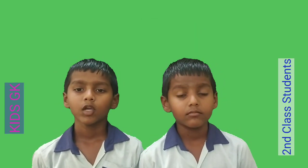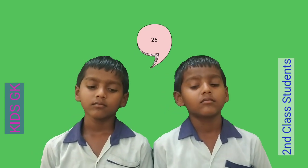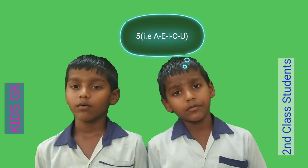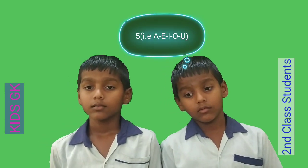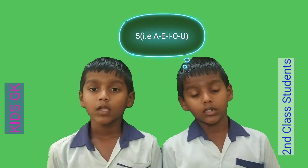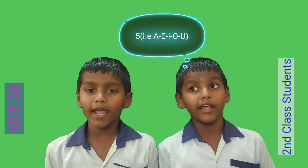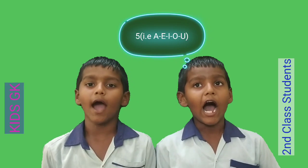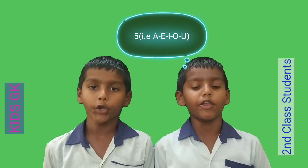How many letters are there in the English alphabet? Twenty-six. How many vowels are there in the English alphabet? Five. What are they? A, E, I, O, U.